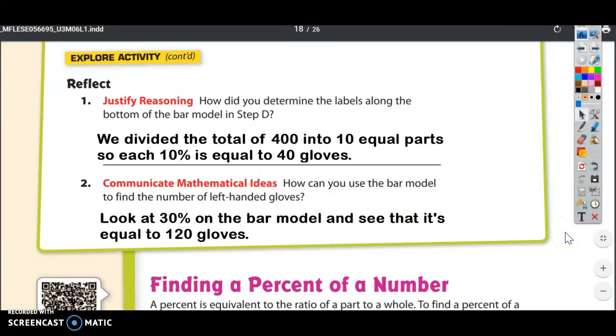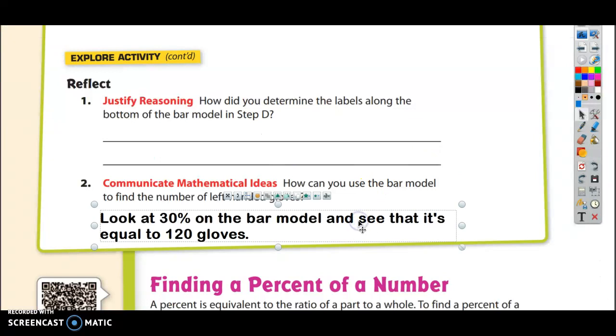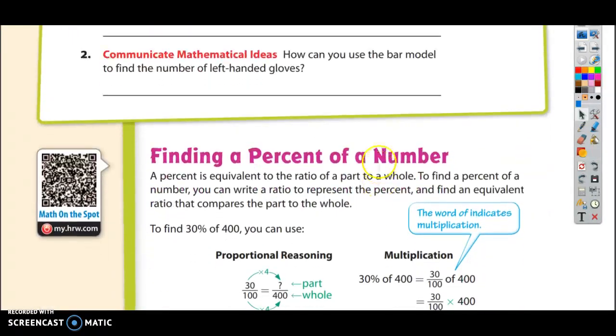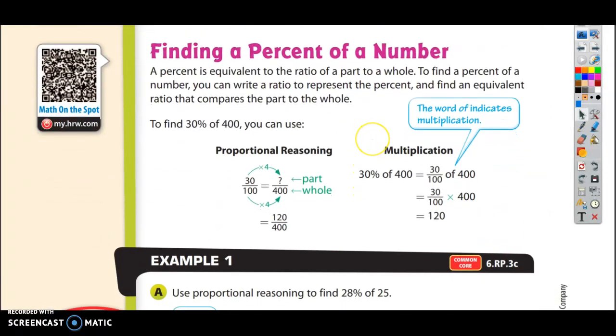Alright let's move on. We're going to learn how to find the percent of a number. There's different methods and this first one is called proportional reasoning. A percent is equivalent to the ratio of a part to a whole. To find a percent of a number you can write a ratio to represent the percent and find an equivalent ratio that compares the part to the whole.